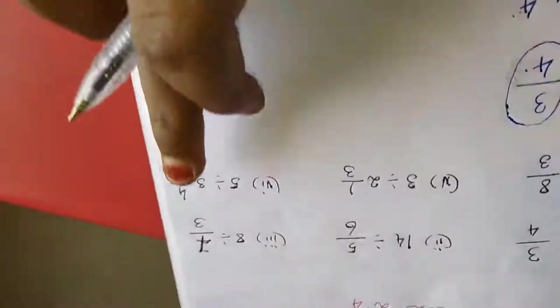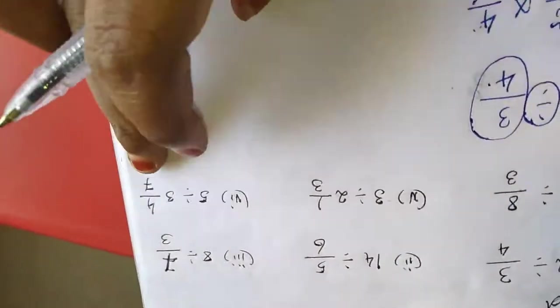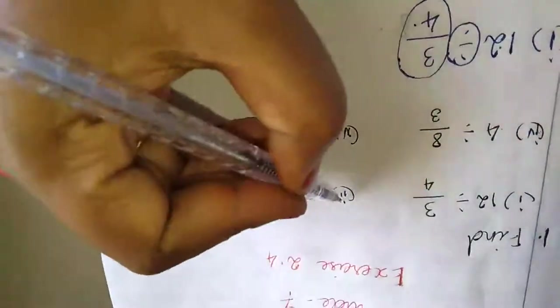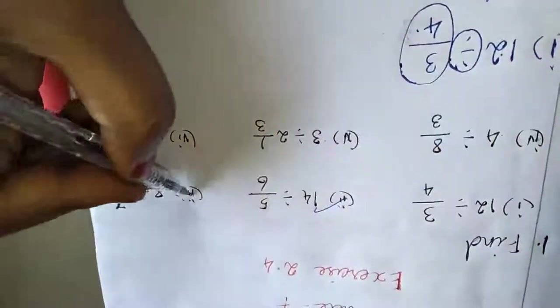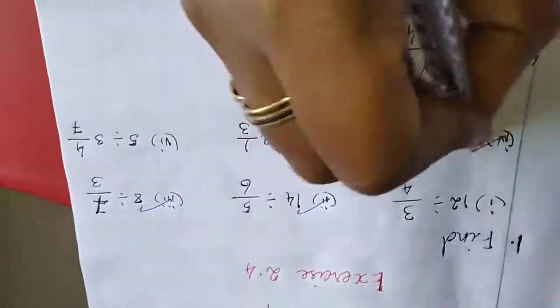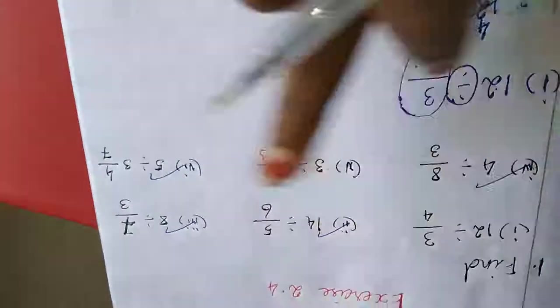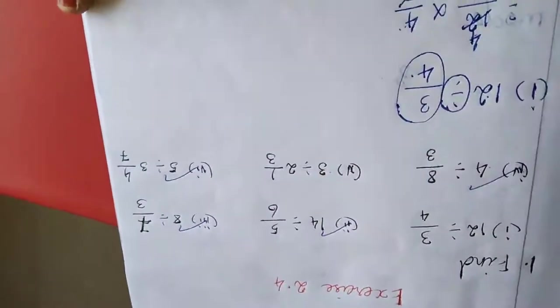The sixth sum is also the same. The balance — second, third, fourth, and sixth — these four sums are homework for you.